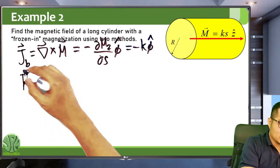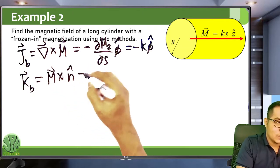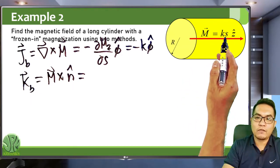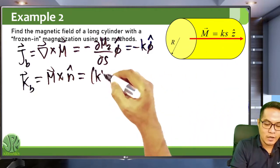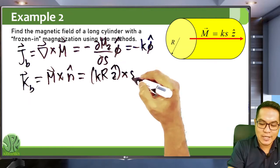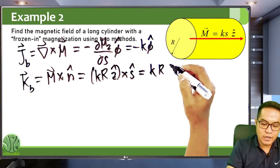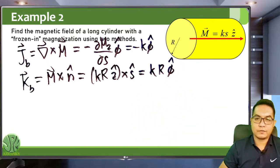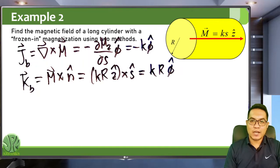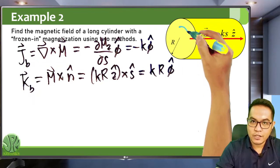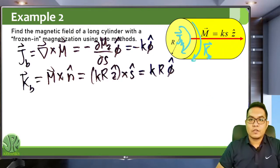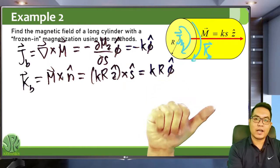For the surface bound current density, K_b = M cross n-hat. At the surface S = R, the magnetization is kR z-hat, and n-hat is the outward normal s-hat. So K_b = kR (z-hat cross s-hat) = kR phi-hat. The volume bound currents and surface bound currents are both in the phi-hat direction, curling around the magnetization direction.